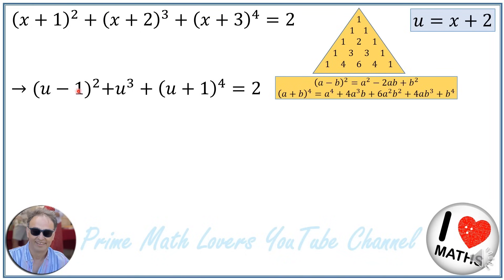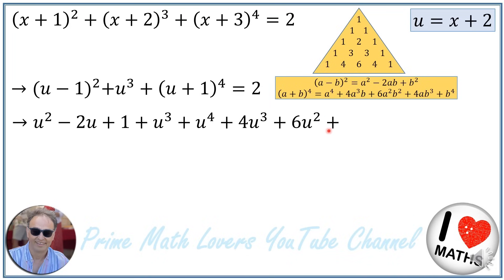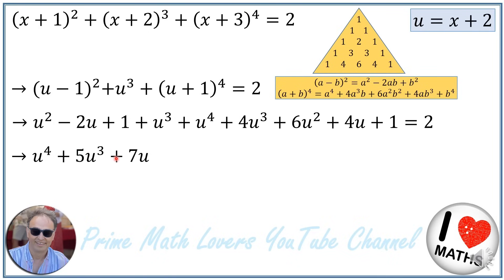Using these formulas to expand the terms: (u−1)² = u²−2u+1, plus u³, plus (u+1)⁴ = u⁴ + 4u³ + 6u² + 4u + 1, equals 2. Rearranging and simplifying: u⁴ + 5u³ + 7u² + 2u + 2 = 2. We have 1·u⁴, then 1u³ + 4u³ = 5u³.